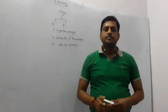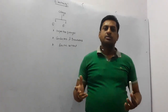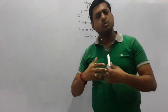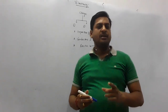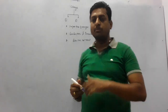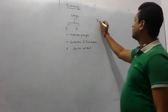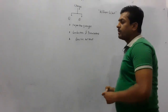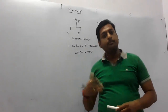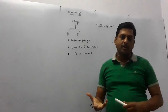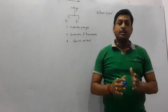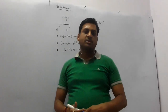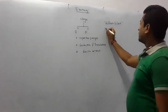Charge is something you cannot see — you can only observe its impact. There were so many scientists who described charge, but the most appropriate definition was given by a scientist named William Gilbert. He said that charge is that property of a body by which that body is able to produce electrostatic force. In other words, charge is that property of a body by which that body can exert electrostatic force.